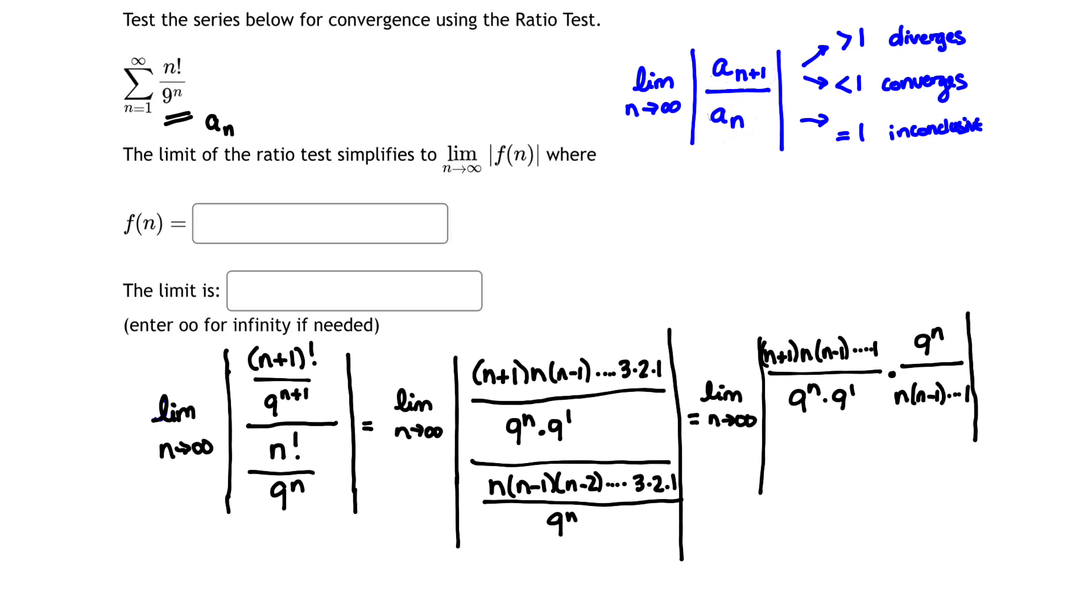What this allows me to do is it allows me to now do some cancellations. So I'm going to keep continuing to simplify this complex fraction, making it simpler. Now 9 to the n cancels from numerator and denominator. In addition, what else cancels? Let's look here.